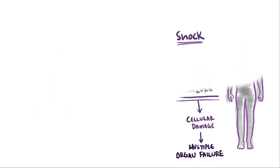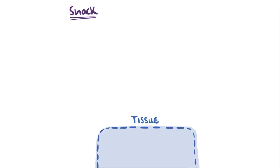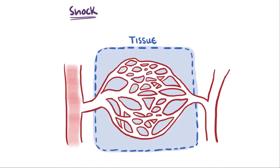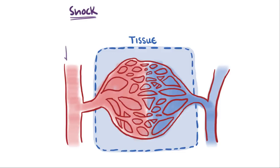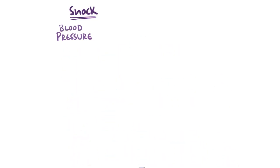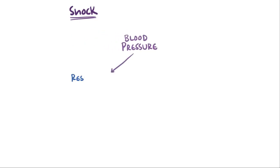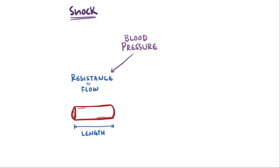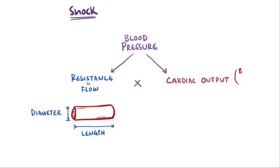With shock, the body's tissues aren't getting enough oxygen via the blood. Normally, blood perfuses through tissue and delivers oxygen because there's enough pressure in the circulatory system to push it through. Blood pressure is a major determinant for the amount of blood perfusing through tissues, and it's determined by two components: the resistance to blood flow in the blood vessels — things like vessel length, blood viscosity, and vessel diameter — and the cardiac output, which is the volume of blood pumped by the heart through the body per minute.